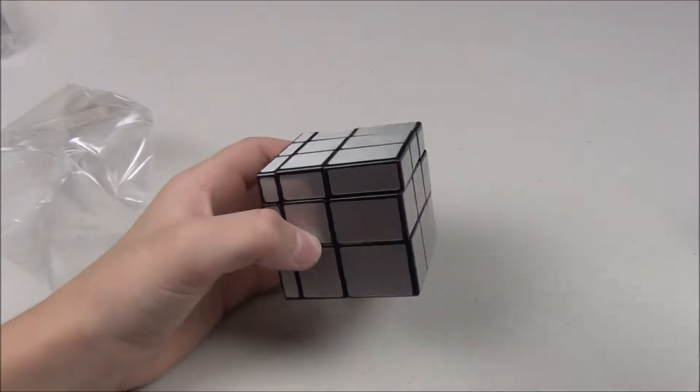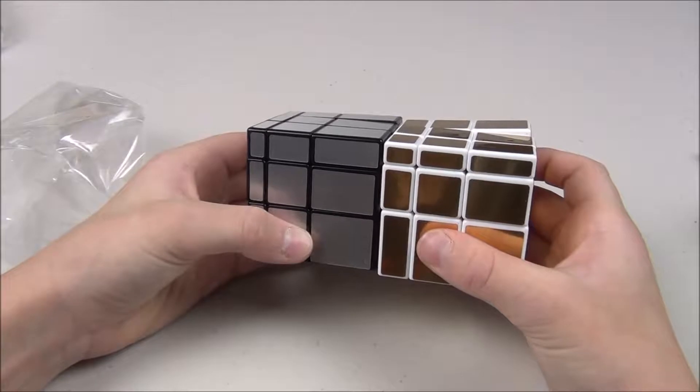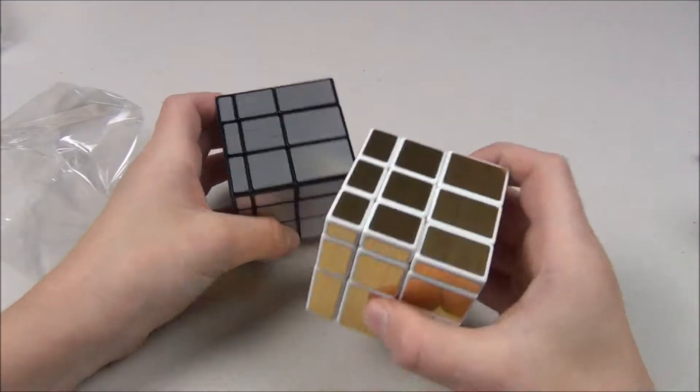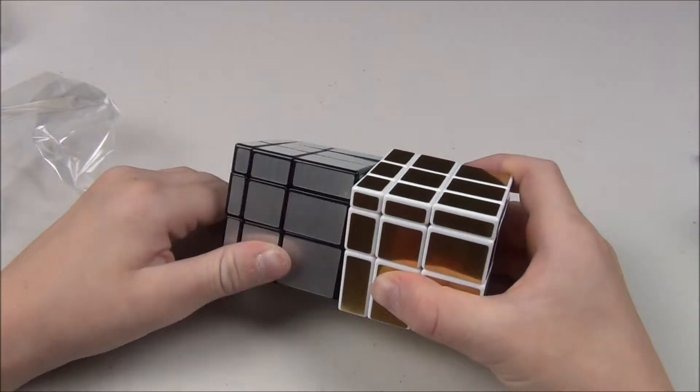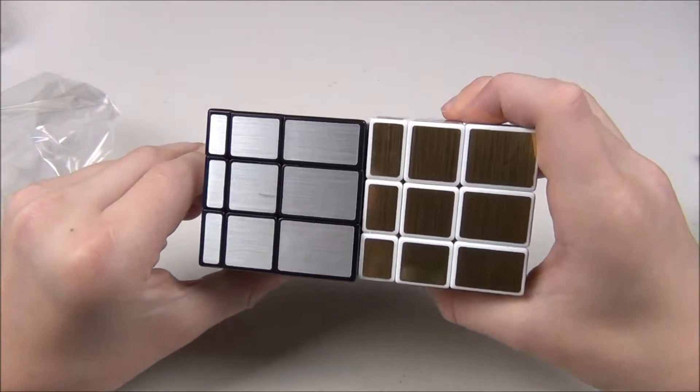Let's go ahead and compare it here to the Shang Shao mirror blocks. The cuts on the stickers seem a little more distinct. Maybe that's just me. Maybe that's just because this one is black and silver. This one is white and gold. Yeah, they're exactly the same size. They look pretty much the same.